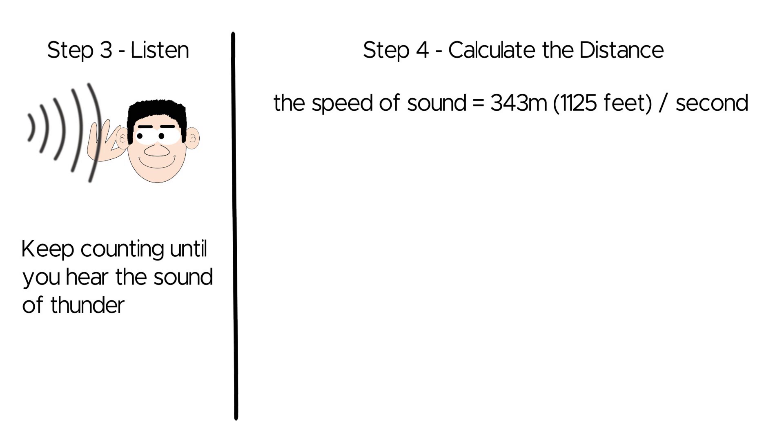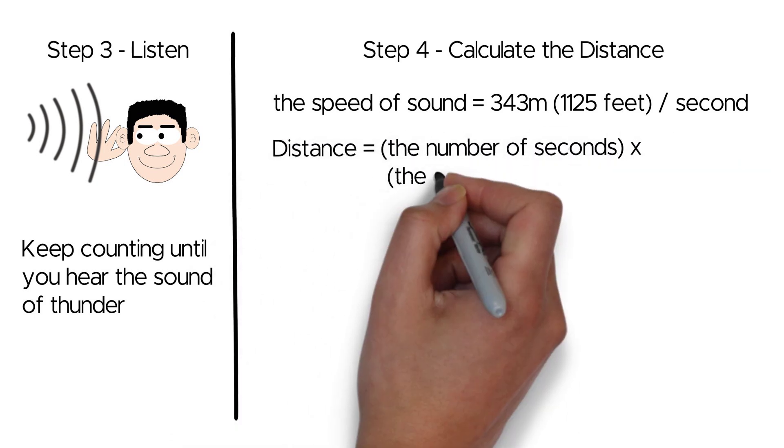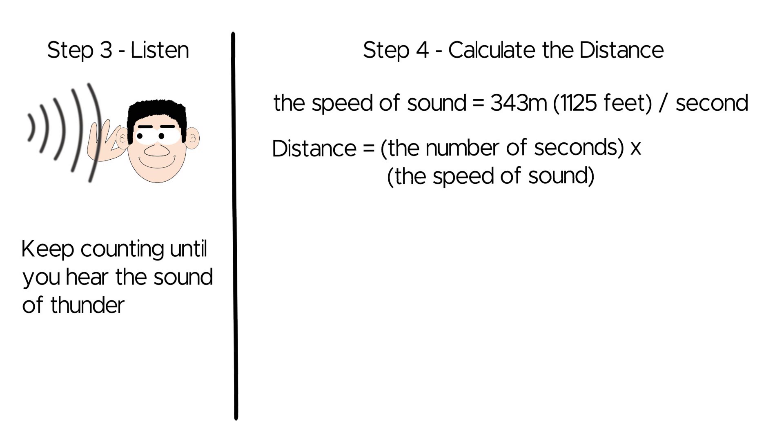To estimate the distance to the lightning strike, multiply the number of seconds you counted by the speed of sound. This calculation gives you the approximate distance in meters, or feet, from your location to the lightning strike.